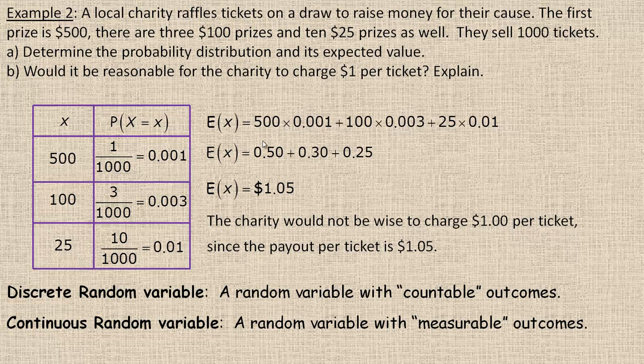A little bit of terminology before we end here. These are all examples of what are called discrete random variables because the random variable has a countable number of outcomes. There were three outcomes here, $500, $100, or $25. In the example with the dice, there's 36 different rolls, but there's only 11 different sums from 2 to 12. In the example with the coins, you could get 0, 1, 2, or 3 heads, so there's only four different outcomes. So those are all examples of discrete random variables because the outcomes are something countable.